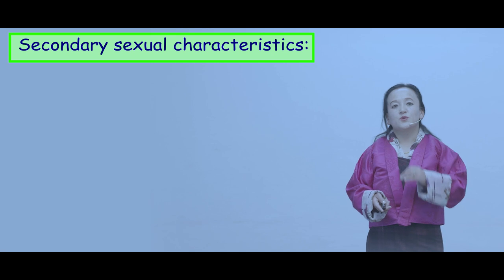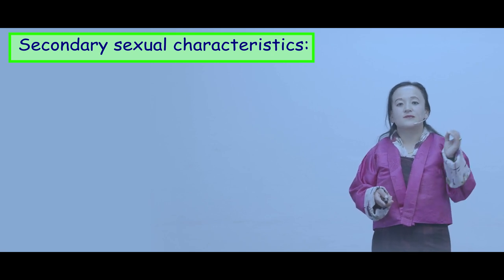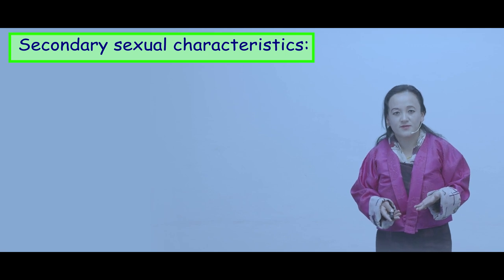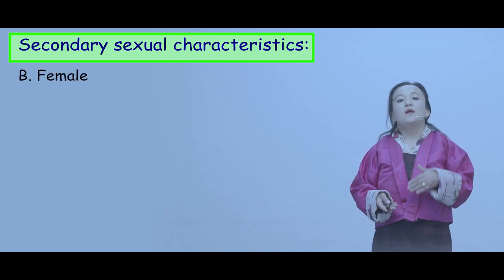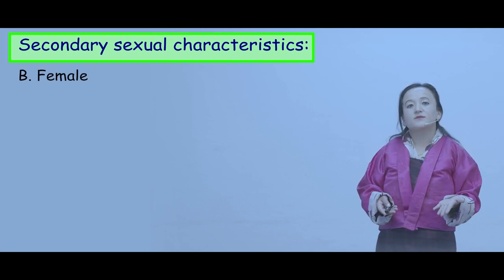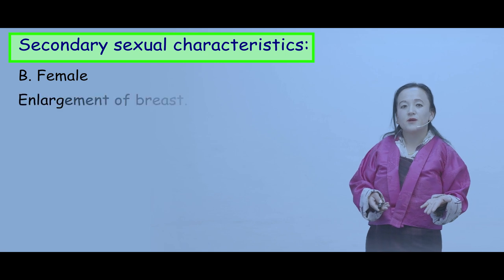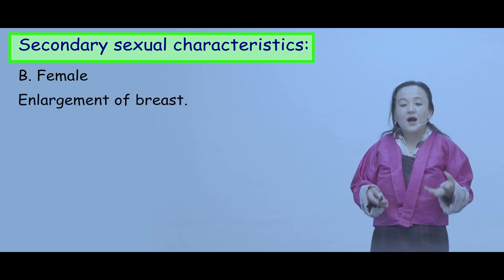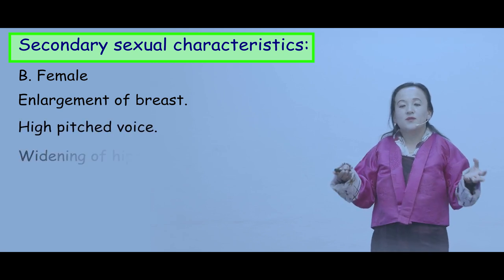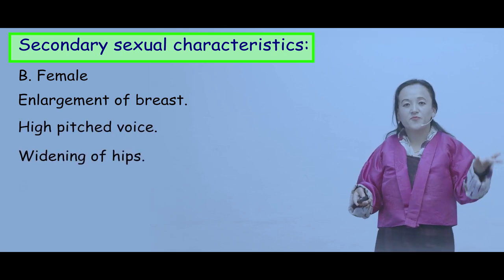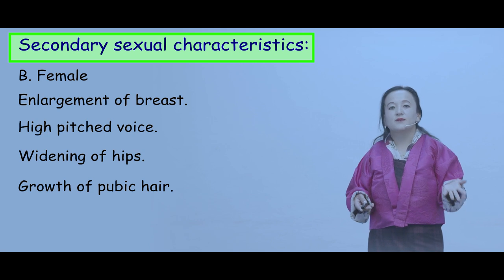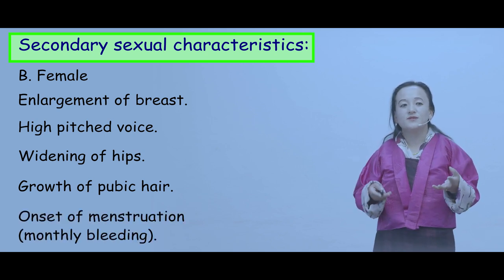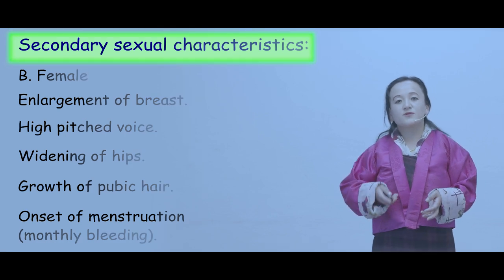Now let us look at the secondary sexual characteristics in the female. These include the enlargement of the breast, high-pitched voice, widening of hips, growth of pubic hair, and the onset of menstruation, which is also known as monthly bleeding.